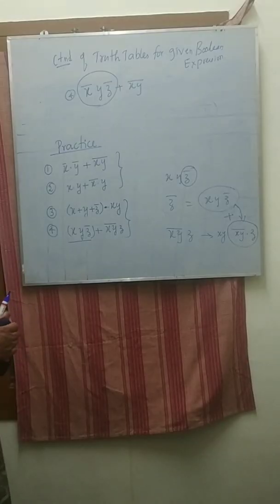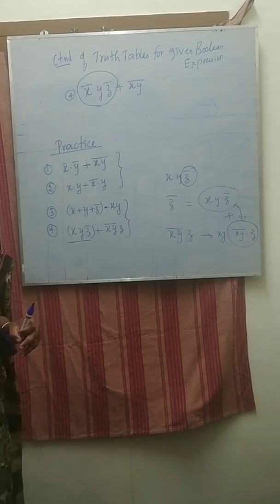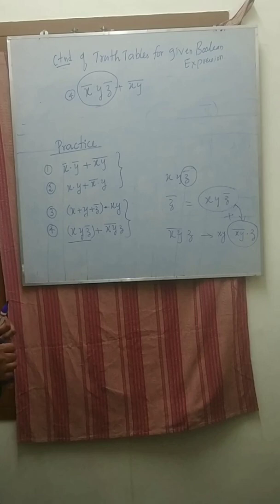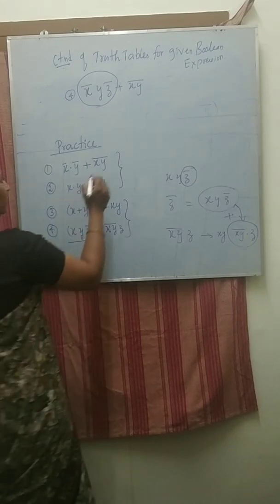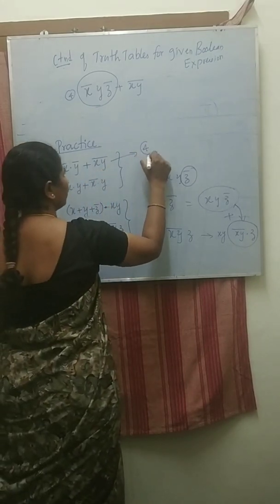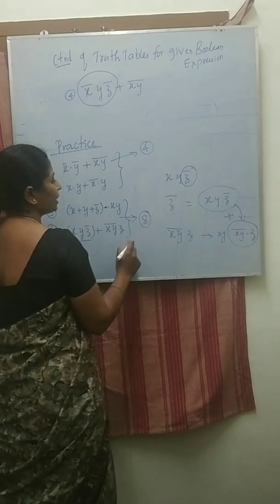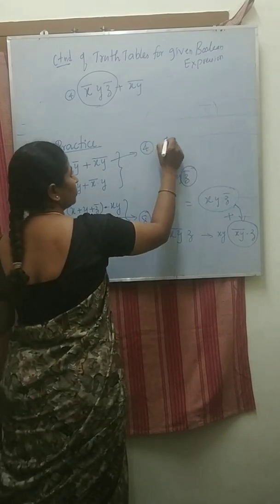So we will continue in the next class: logic gates. Hope you understood how to write the truth tables. If it is two variable, then you will get four input terms. If we have three variables, then you will get eight input terms.